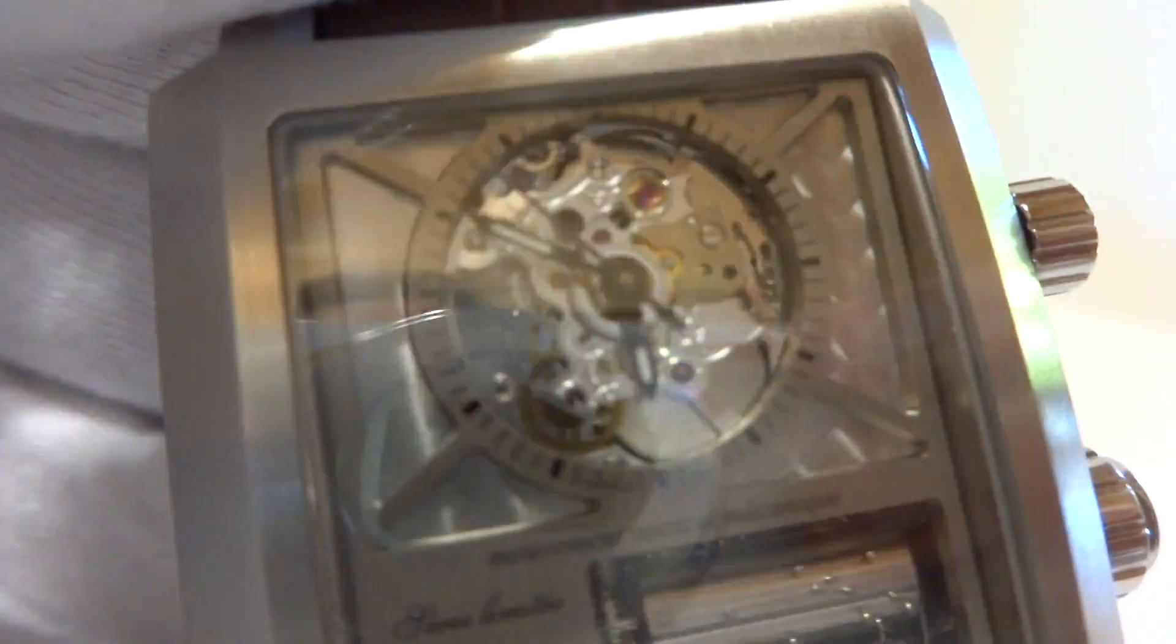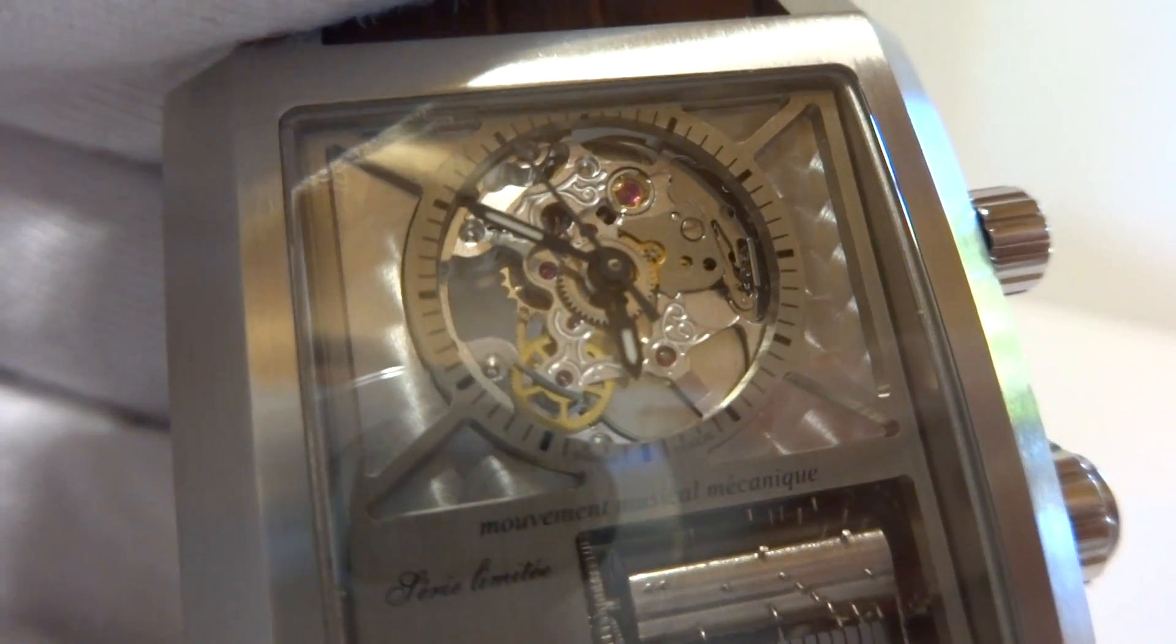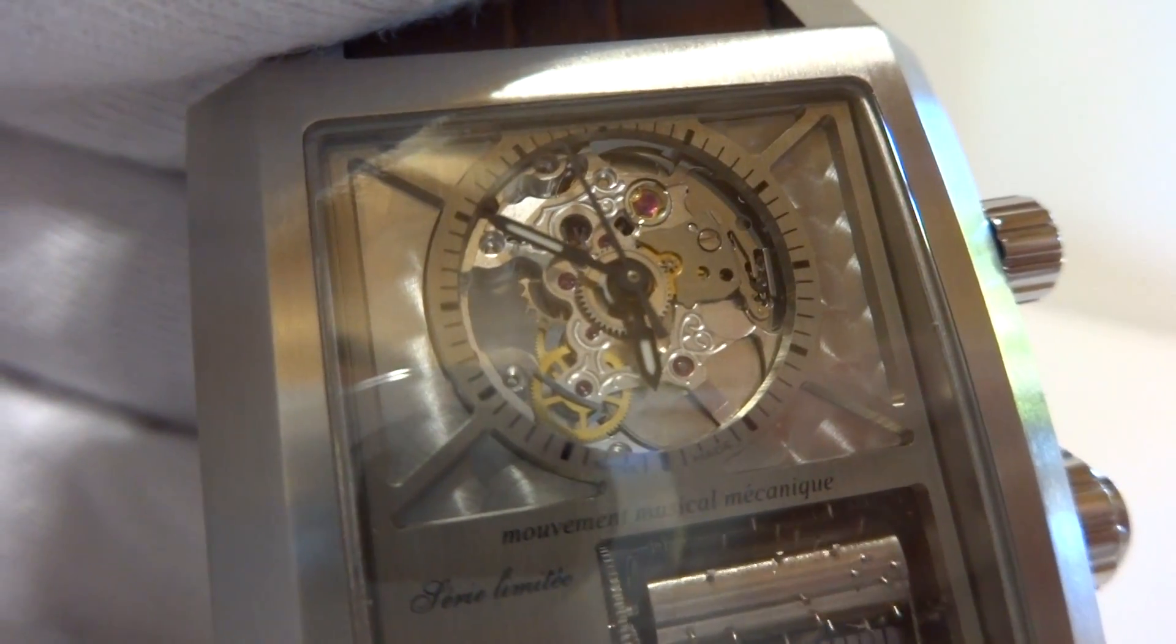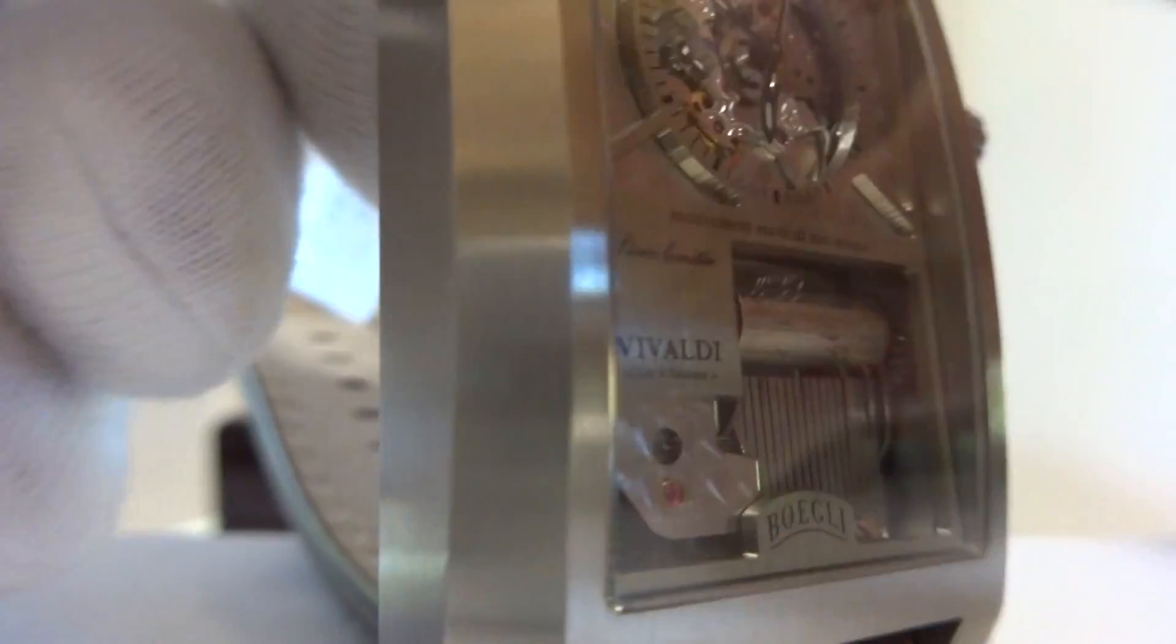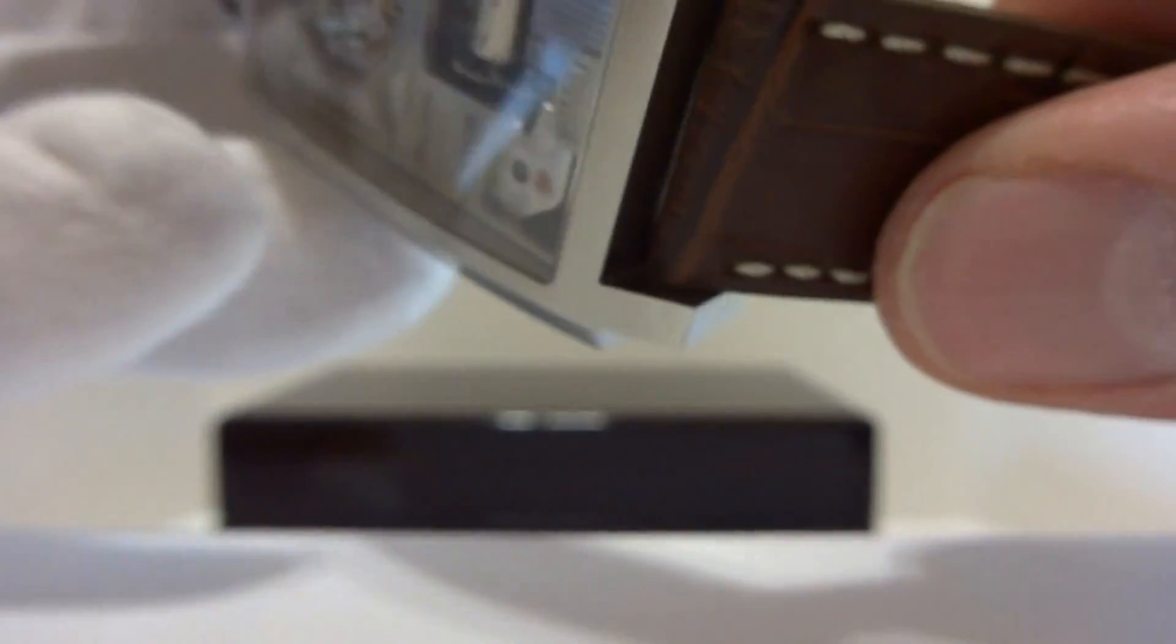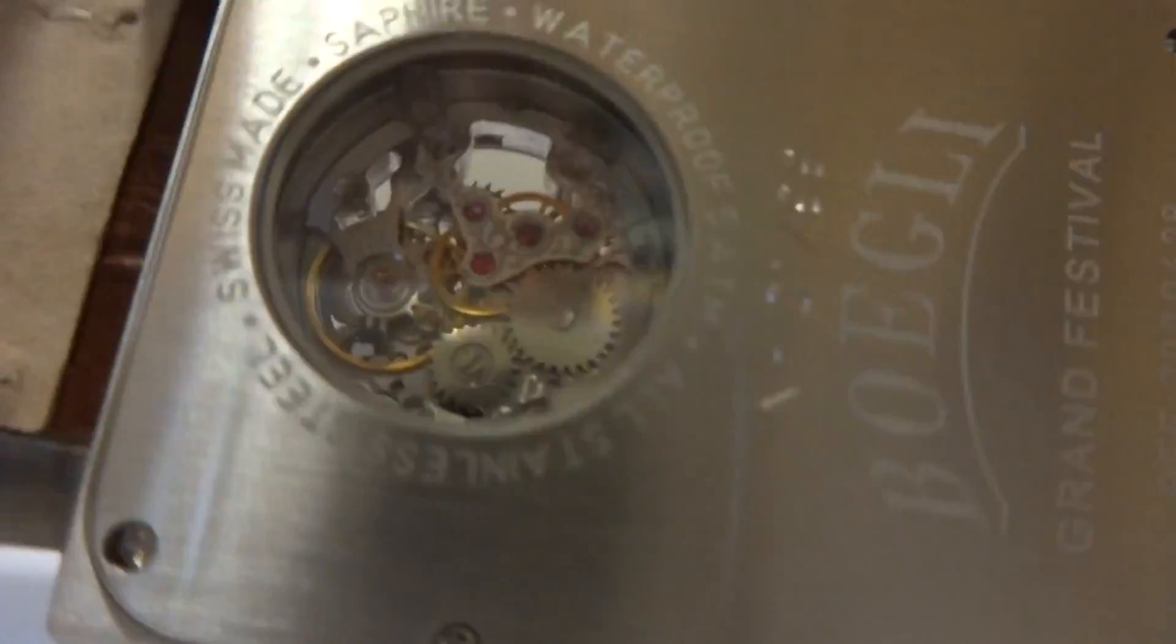And you can see the skeletonized watch movement working. It's tough to take a video because the watch is so shiny. Although actually this is a matte finish or a brushed stainless steel case, which is nice because it doesn't scratch as easily as one that's highly polished.